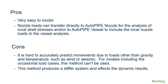There are a few pros for this method: it's very easy to model, and the nozzle loads can transfer directly to AutoPipe Nozzle for analysis of local shell stresses, or to AutoPipe Vessel to include local nozzle loads in the vessel analysis. But there are also some cons. It's hard to accurately predict movements due to loads other than gravity and temperature, such as wind or seismic. So for any models including occasional load cases, you really shouldn't use this method. Additionally, this method produces a much stiffer system which can affect dynamic results, so if you're also running dynamic analysis, this might not be the best method to use.